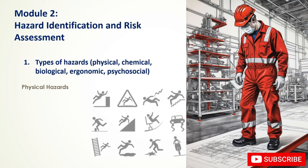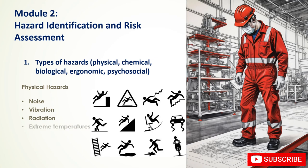Physical hazards are those that can cause injury or harm through direct contact or exposure. They include excessive noise that can damage hearing, vibration causing musculoskeletal disorders, radiation leading to health issues including cancer, extreme temperatures causing heat stroke or hypothermia, inadequate lighting, slips and trips from poor housekeeping or wet floors, and machinery hazards from moving parts and sharp edges.